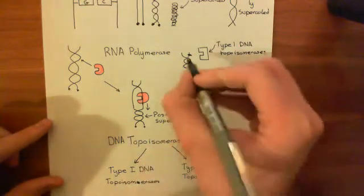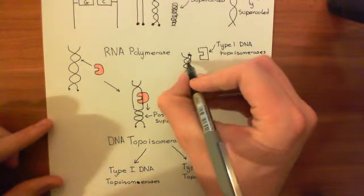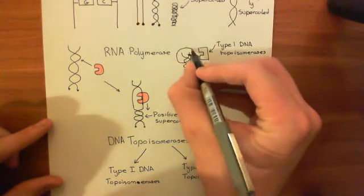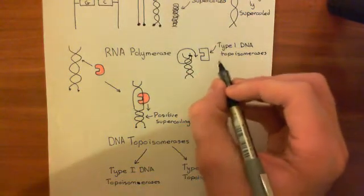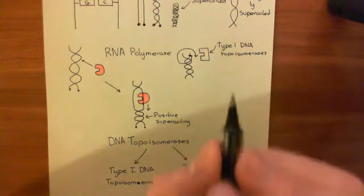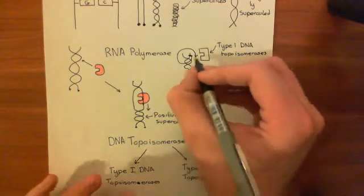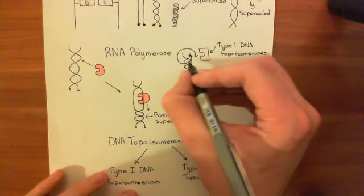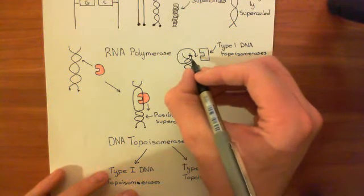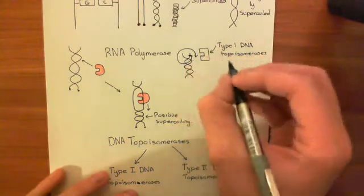And what it's going to do is it's then going to uncoil this. So it's going to bring this round here and then uncoil it and remove a single coil from the DNA. So it cuts the DNA, then it loops the strand around the other strand, removes a single coil, and then it will re-ligate the DNA strand that it's cut back together.